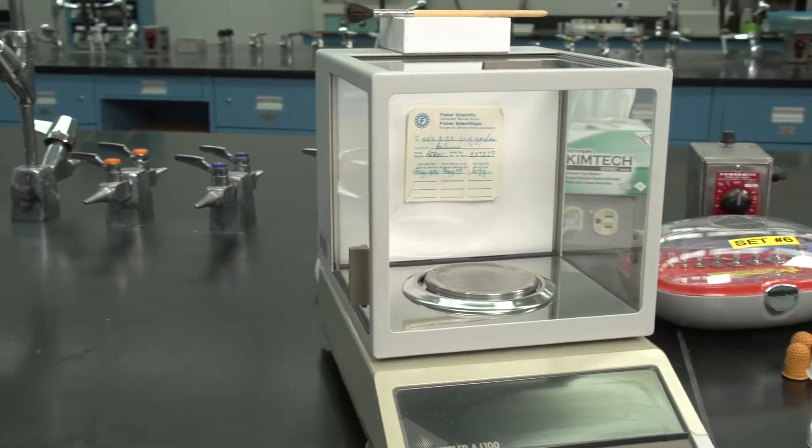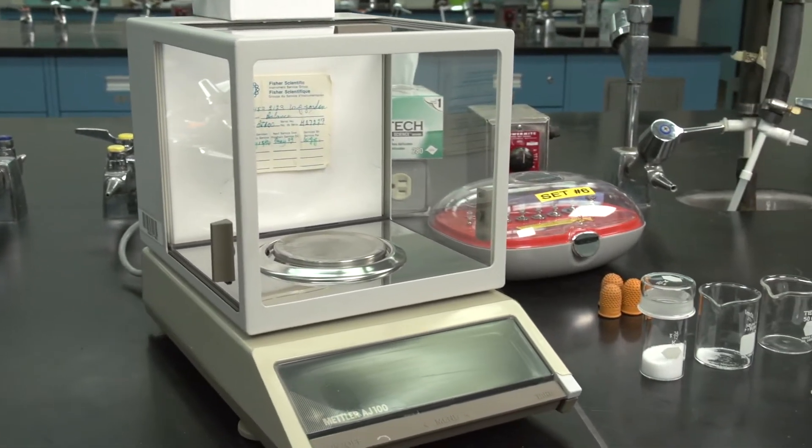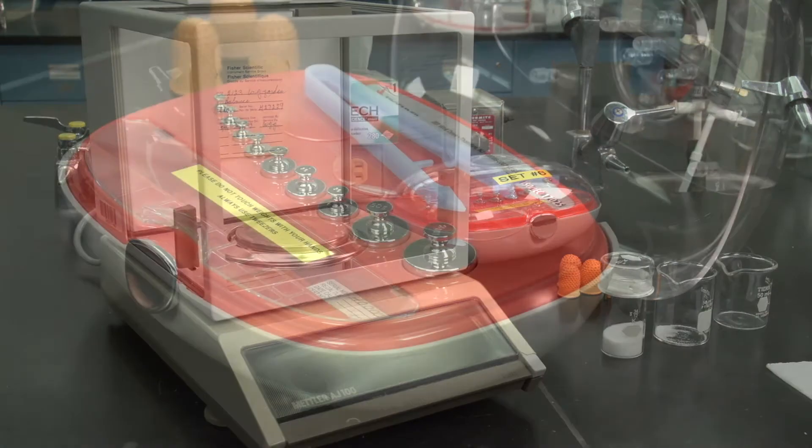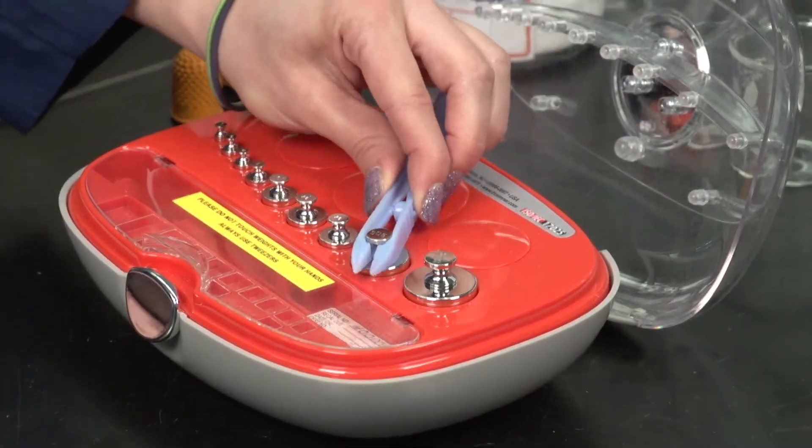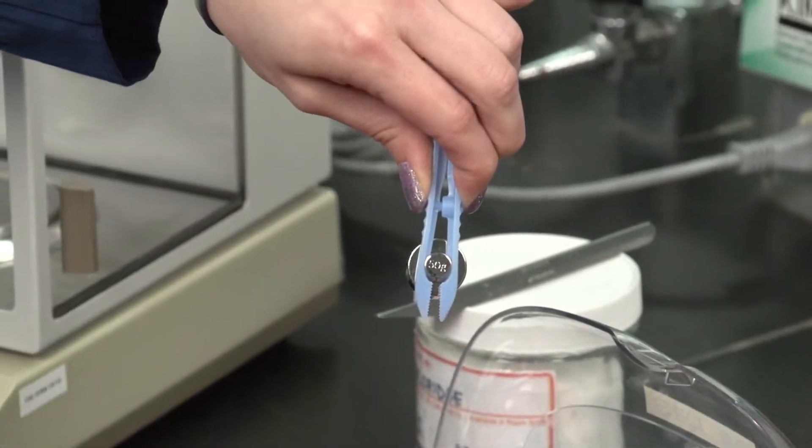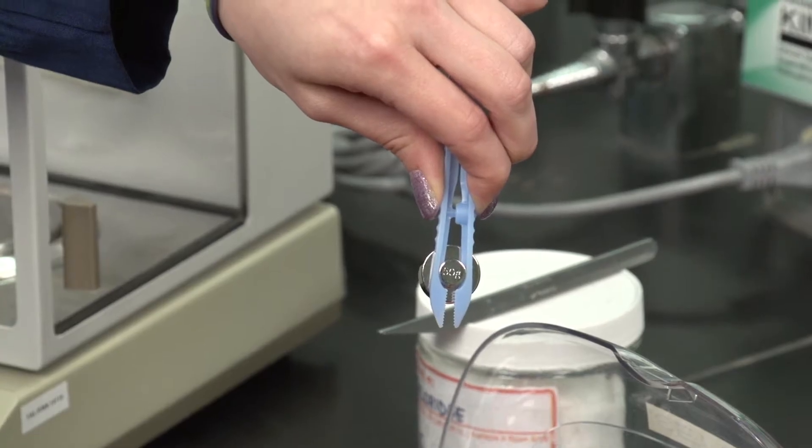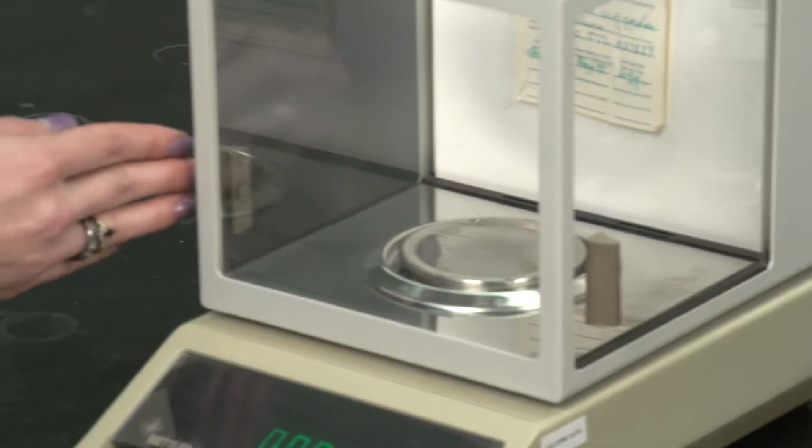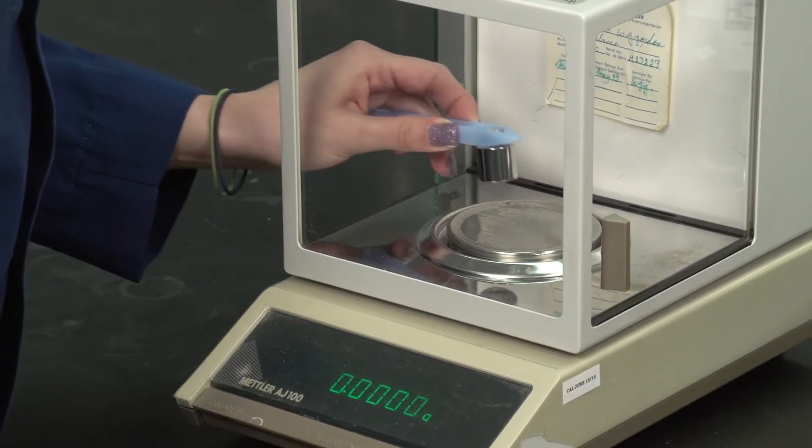Balances must be cleaned at all times and spills must be cleaned immediately. Balances are checked either daily or weekly with a calibration weight according to specific quality control requirements. Typically, analytical balances are inspected annually.